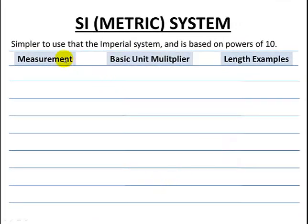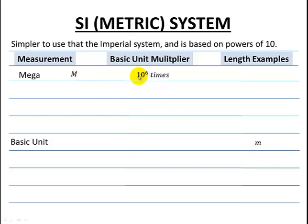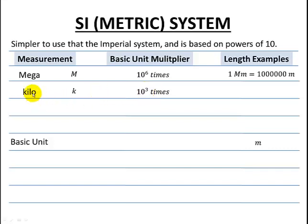In our metric system, it's a little bit easier to use than the Imperial system because it's based on powers of 10. Let's take a look at a length example where the base unit is the meter. Starting with the prefix mega — abbreviated capital M — it means it's bigger than our base unit by 10 to the 6. So one megameter is 10 to the 6, or a million meters. The prefix kilo, given by a lowercase k, has a multiplier of 10 to the 3. So a kilo is a thousand times bigger than our base unit, meaning one kilometer is a thousand meters.